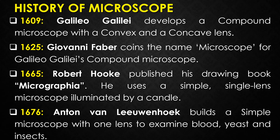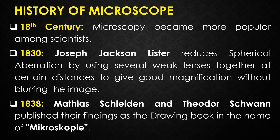In the 18th century, as technology improved, microscopy became more popular among scientists. Part of this was due to the discovery that combining two types of glass reduced the chromatic effect. In 1830, Joseph Jackson Lister reduced spherical aberrations — which produce imperfect images — by using several weak lenses together at a certain distance to give good magnification without blurring the image.